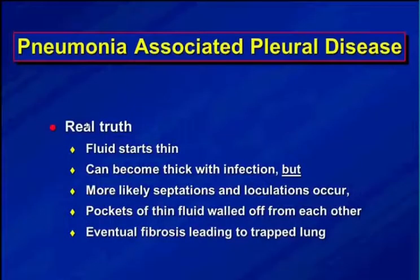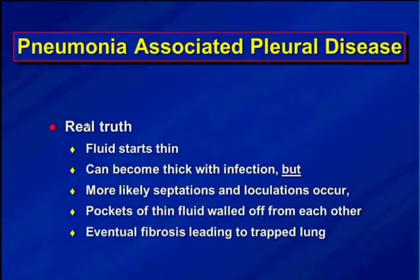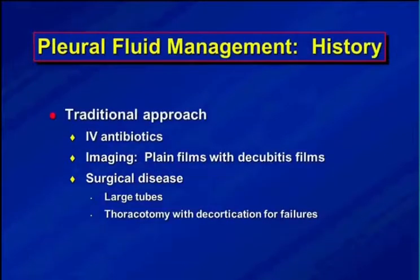The real truth is that fluid starts out thin and can become thick with infection, but more likely we see septations and loculations that create pockets of thin serous fluid walled off by fibrous tissue. Eventually fibrosis can lead to a trapped lung, and that's what we want to avoid.